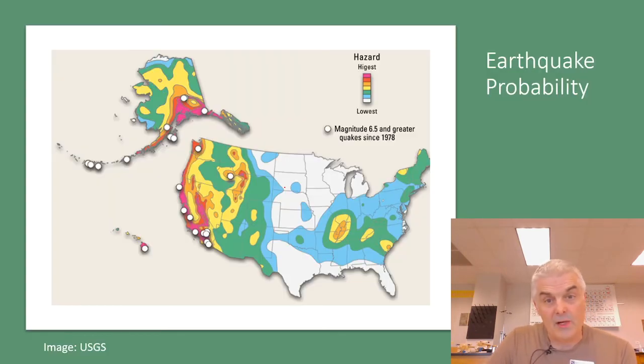Also, we can predict earthquake probability. Where are earthquakes going to happen? Again, we talked about where they happen, typically on plate borders. But here's a map of the United States, and the red or pink, that's going to be the highest probability of earthquakes, at least 6.5, the big ones.